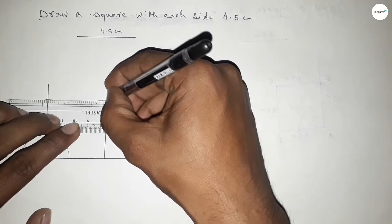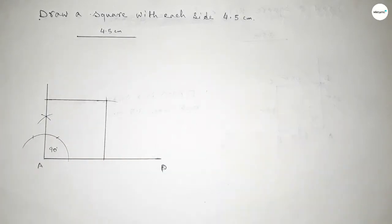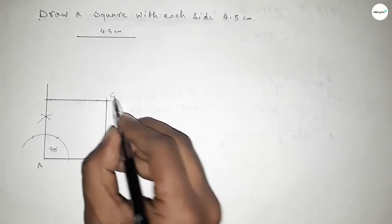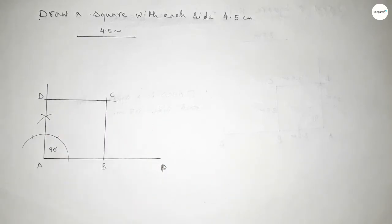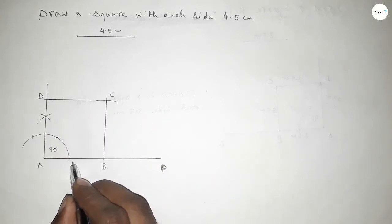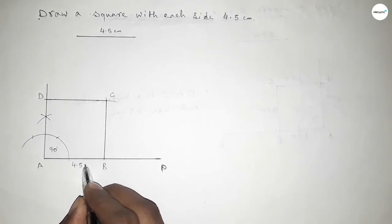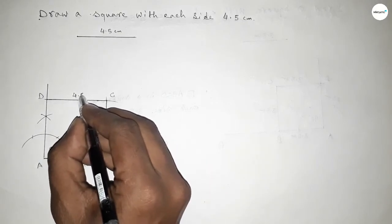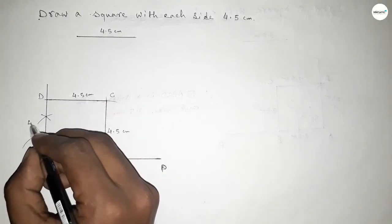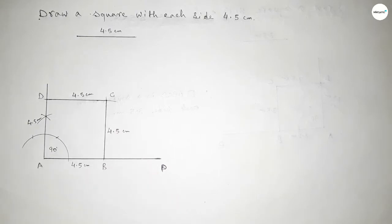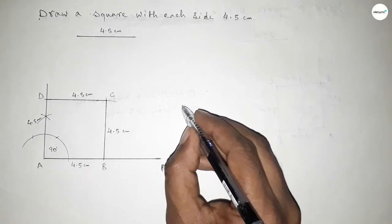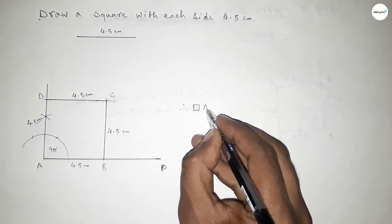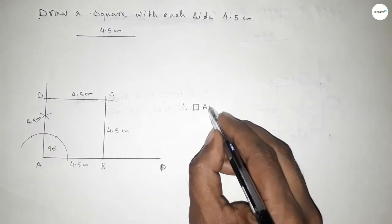Joining this side. This is point B, this is point C, and this is point D. Each side is 4.5 centimeters — this side is 4.5 cm, this side is also 4.5 cm, this side is also 4.5 cm, and this side is also 4.5 cm. Therefore rectangle ABCD is a square.